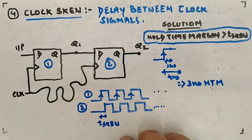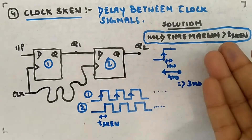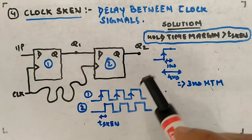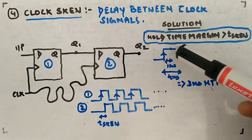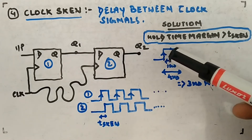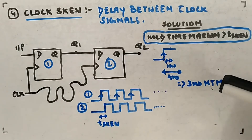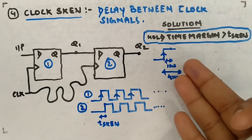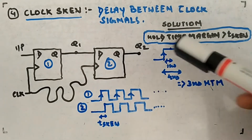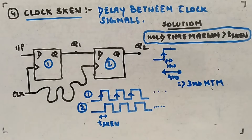This is something you don't want. The solution is to increase the hold time margin, or keep the hold time margin greater than t_skew. If you remember, the hold time is the time the input must remain stable after the clock signal — say one nanosecond. If the input changes after four nanoseconds, there's no hold time violation, and the hold time margin is four minus one, which is three nanoseconds. I covered this in the setup time and hold time video.